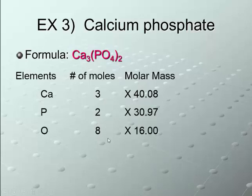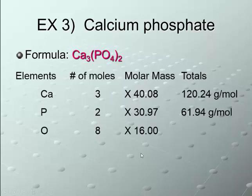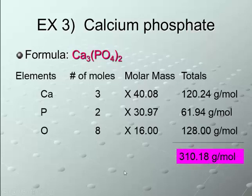So, if we multiply our moles by our molar masses, we get 120. We get 62, and we get 128. So, now, we're just going to add all of those up for a total of 310.18 grams per mole.